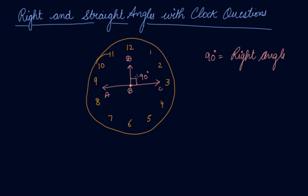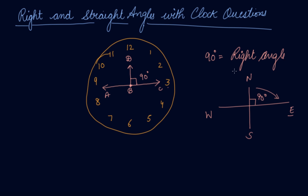Now let's say it's north, south, east and west — these are the directions. From north, if your clock hand moves clockwise and it reaches the east point at 3, it makes an angle of 90 degrees. You call it a right angle. Again, from east to south, it is again a 90 degree angle.